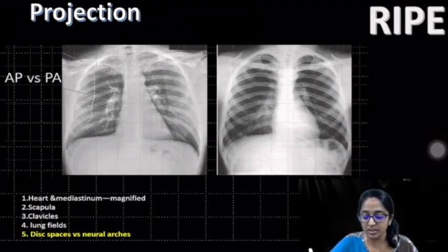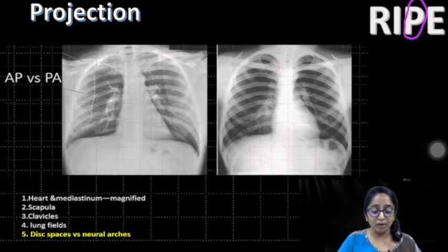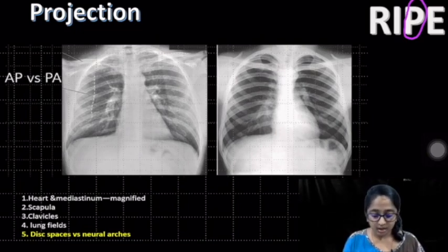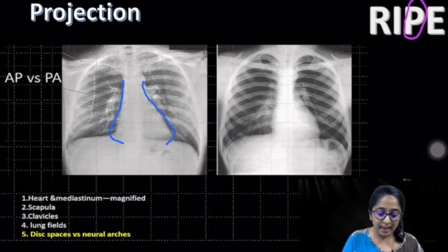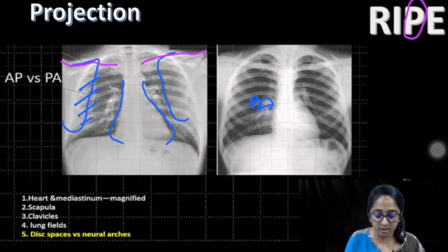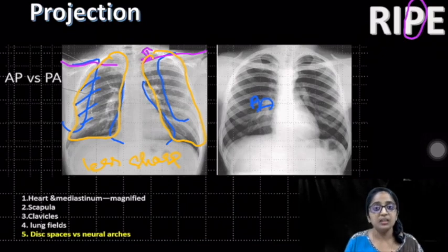Next, assessing the projection. The preferred radiograph is the frontal PA projection. Summarizing the five important differences between AP and PA radiograph: in AP, the heart and mediastinum appear magnified; the scapula overlies the lung fields more than in PA, obscuring the lung fields; the clavicles tend to be more horizontal and slightly higher up; and the lung fields appear relatively reduced in volume and less sharp.